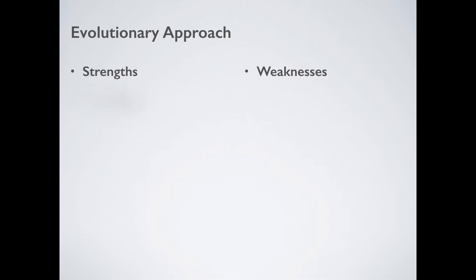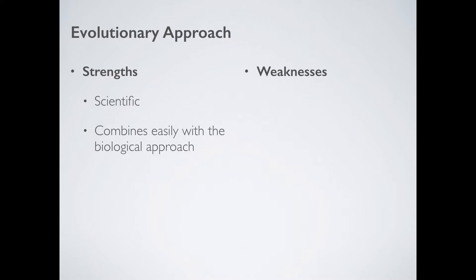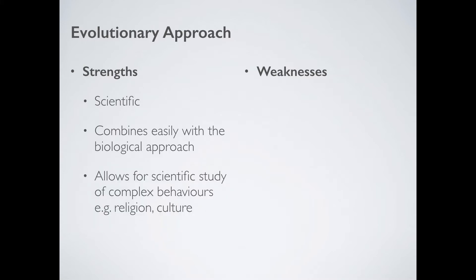In terms of strengths and weaknesses, one of the best strengths of the evolutionary approach is that it is scientific — lots of observation, recording of data, coming to reliable and beneficial conclusions. It also combines easily with the biological approach: an evolutionary psychologist thinks about the survival value of behaviour, and the biological approach looks for the genetics that underlie that behaviour, giving twice the power. Finally, it allows for a scientific study of very complex behaviours that other approaches wouldn't dare touch — things like religion, culture, sociality, and friendship.